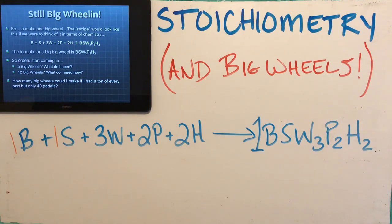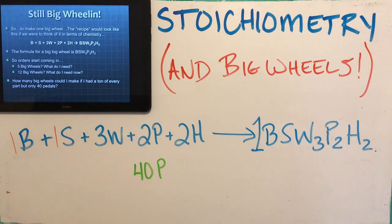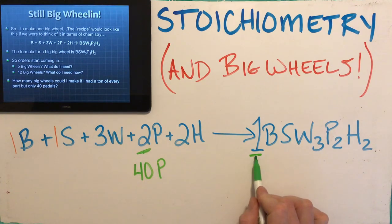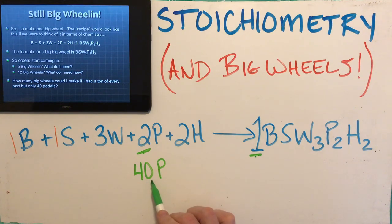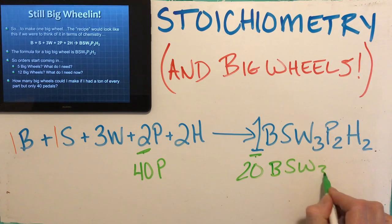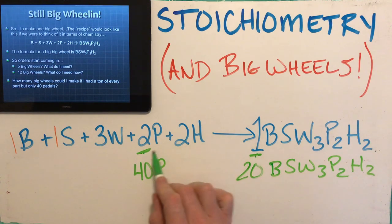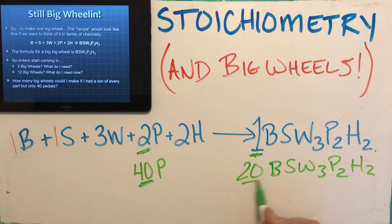I could also answer other questions. How many big wheels could I make if I had a ton of every part but only had 40 pedals? I've got a ton of bodies, seats, wheels, and hand grips — but only 40 pedals left in stock. Every big wheel needs two pedals, so this number is twice as large. You're already thinking: sir, it's 20 big wheels. There's a two-to-one relationship: whatever the pedals are, the big wheels are half. 40 pedals — half of that is 20.